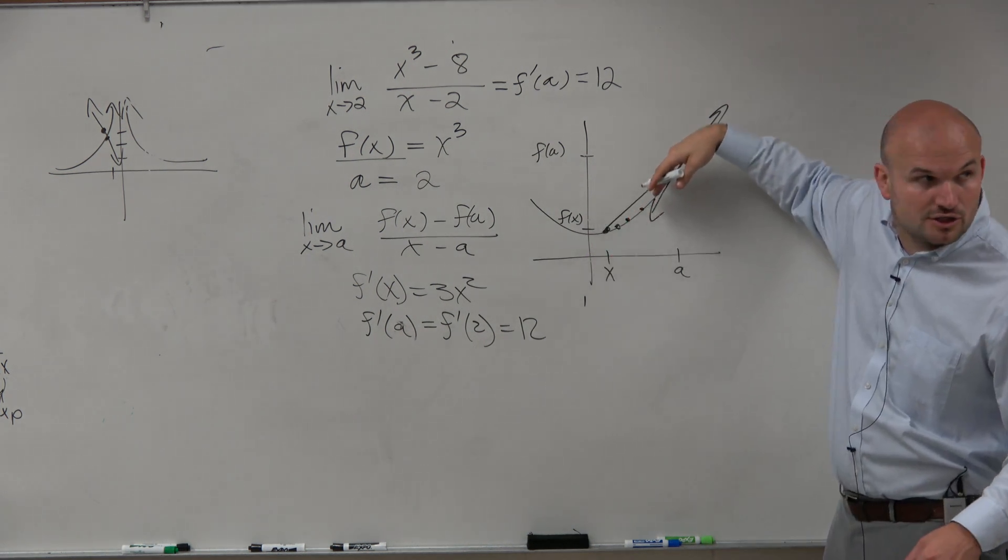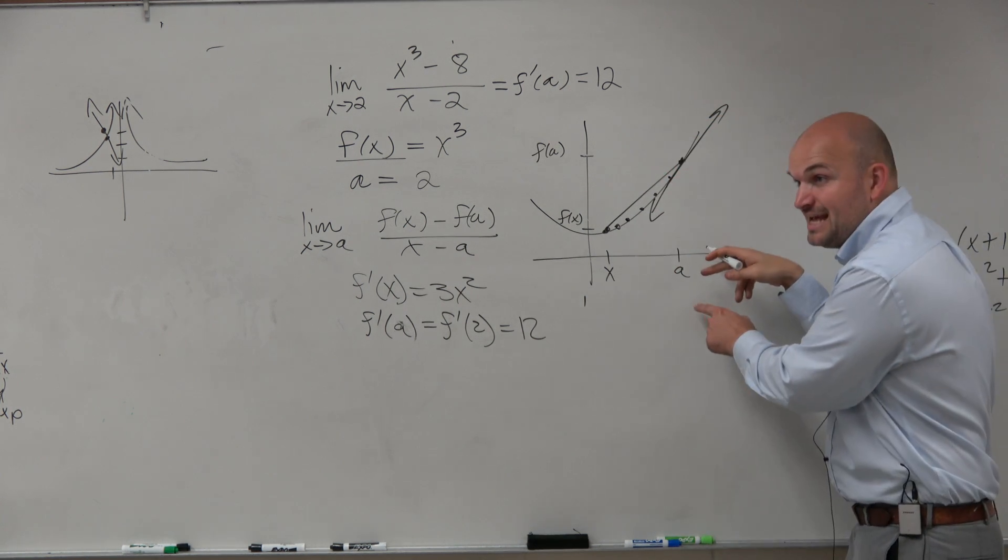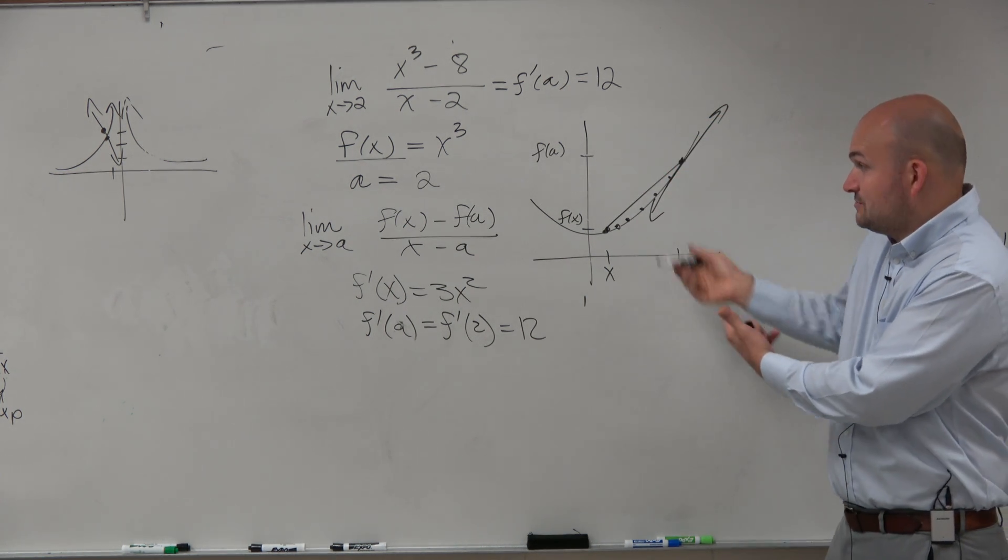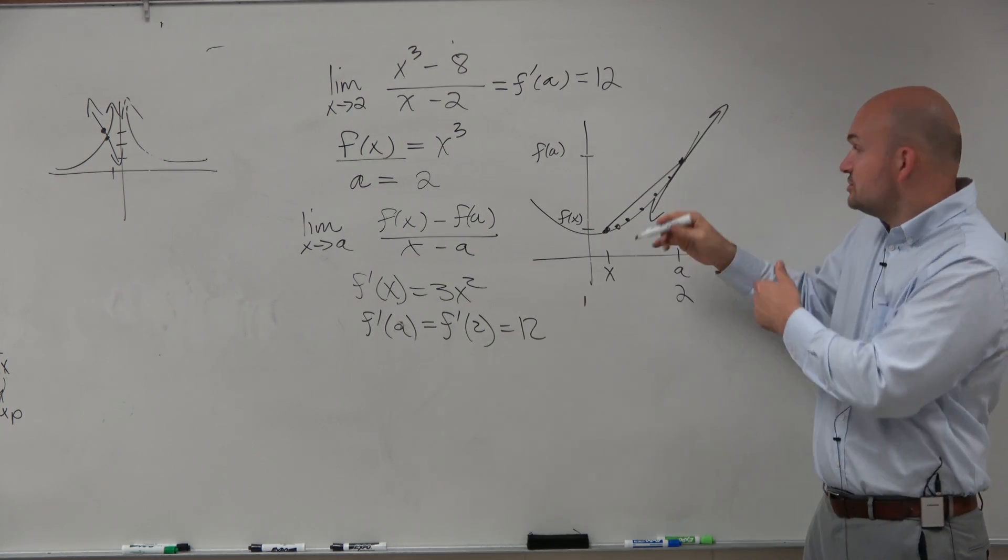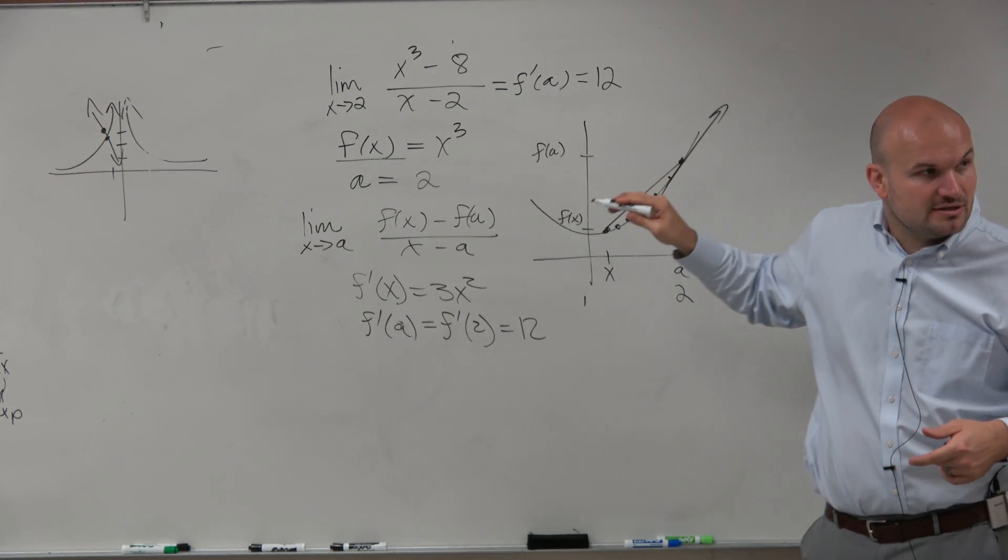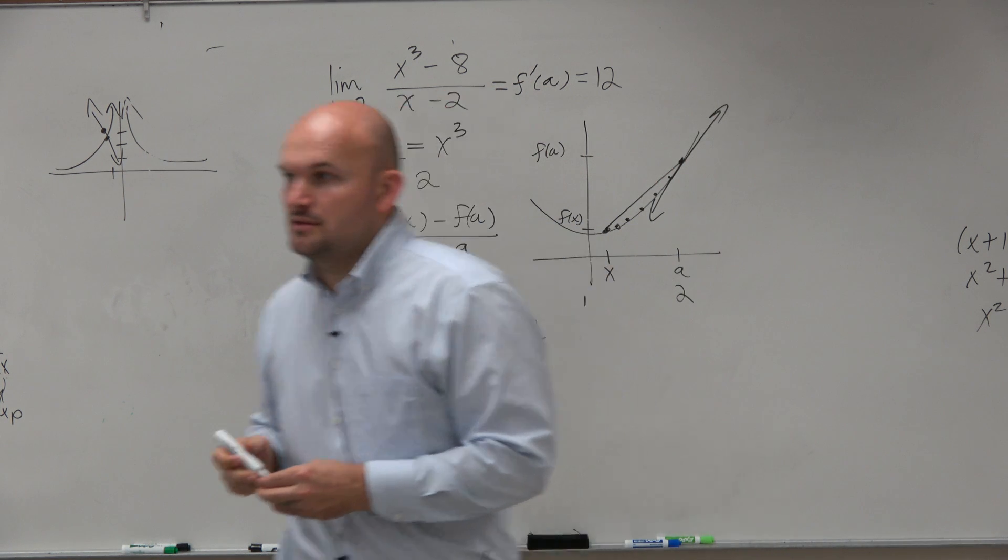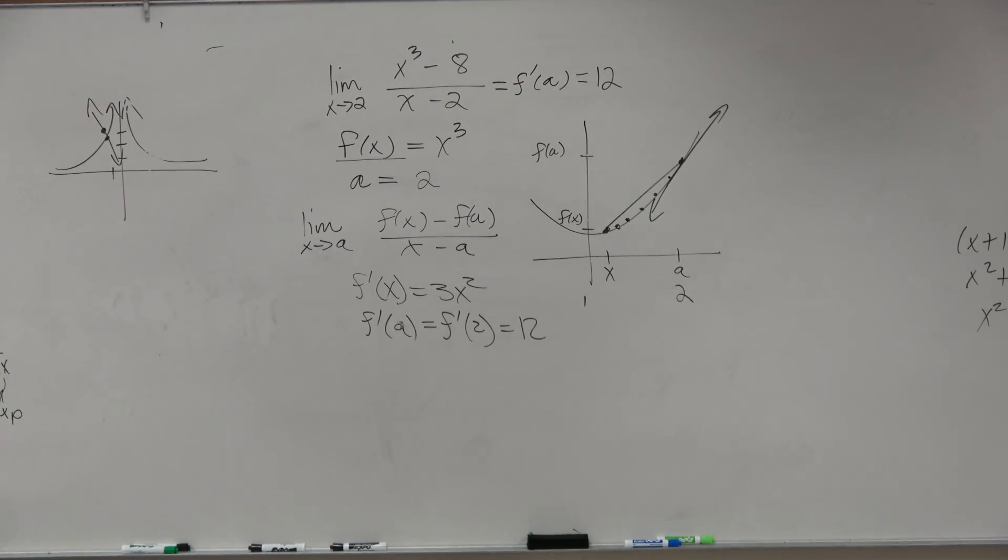Do you guys see how we're getting closer and closer to that tangent line at a? So we need to figure out what a is. Well in this case, a is equal to 2. So that's why once we find the tangent line, we plug in 2, that gives you that slope of that equation right there. You don't need to graph it.